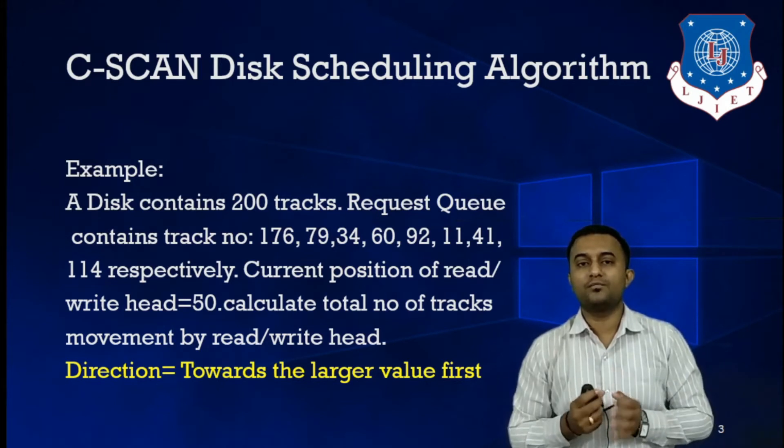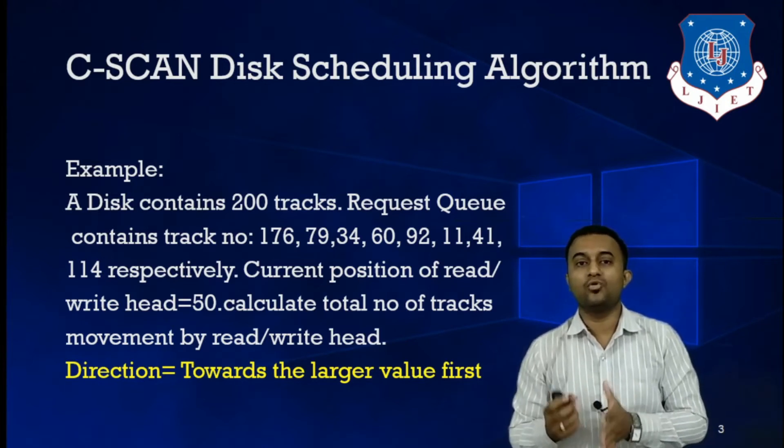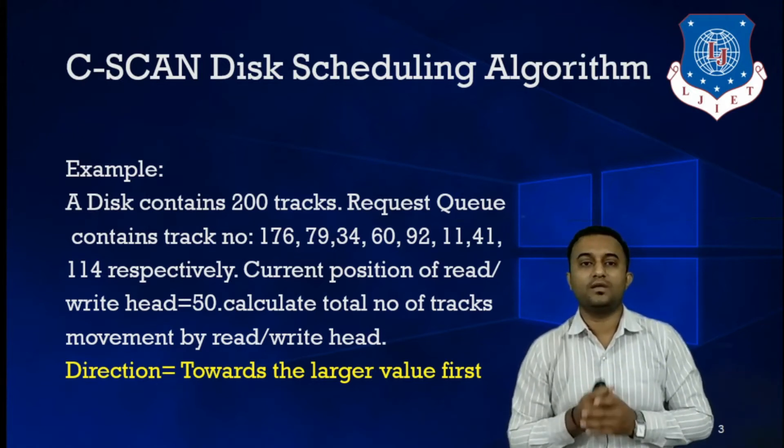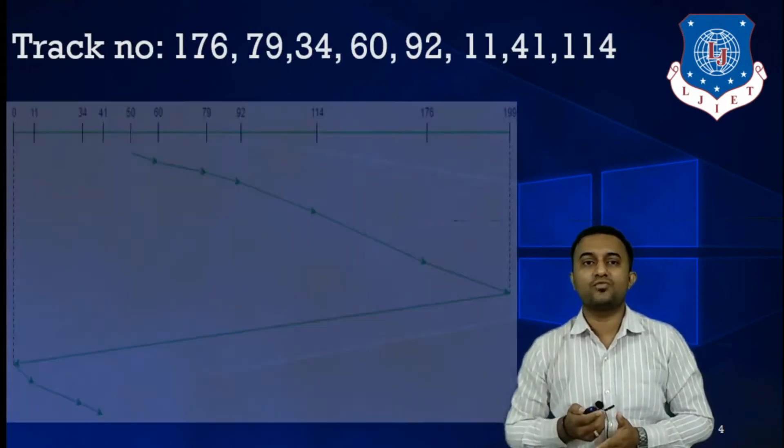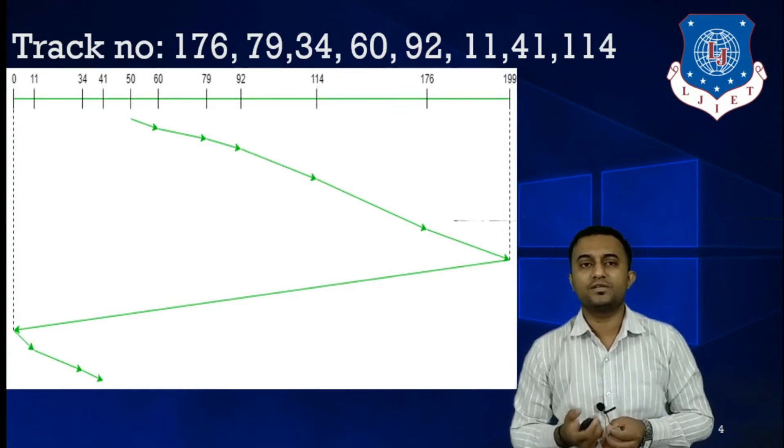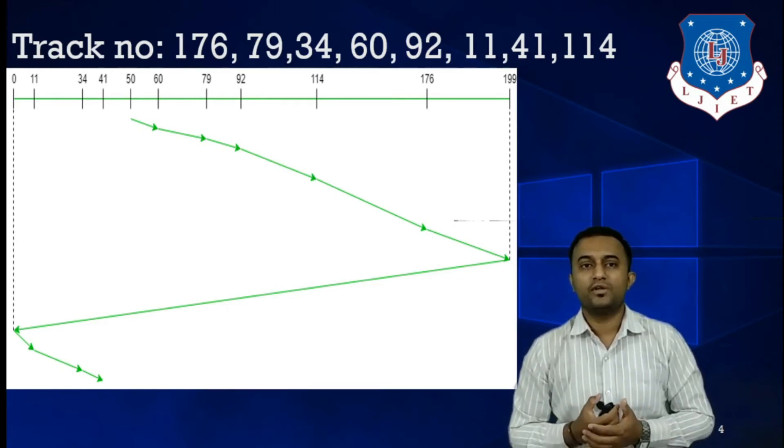What is larger value first? Whatever requests we have which are larger than 50, those requests will be fulfilled first in one go. And then we will come back and satisfy the remaining requests which are less than 50. Let us discuss this. By having these track numbers, we need to start the journey from the current read position, which is 50. Because we need to start the journey in the direction towards larger value, the first request will be 60. So 60 is satisfied.